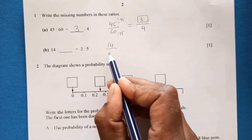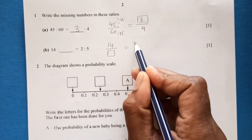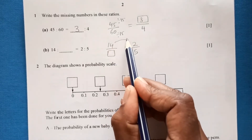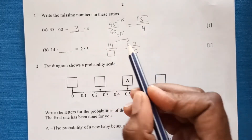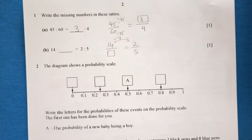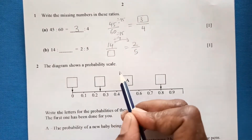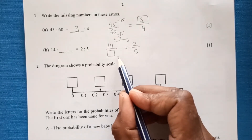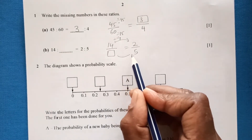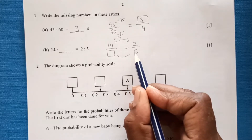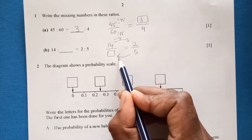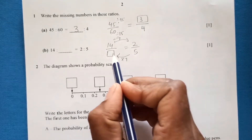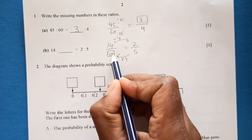Next one: 14 over something equals 2 over 5. To get 2 from 14 we divide by 7. But it is the reverse process, so it will be times 7, which gives 35.